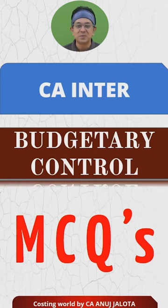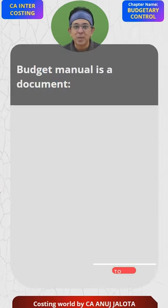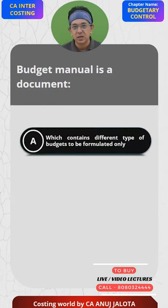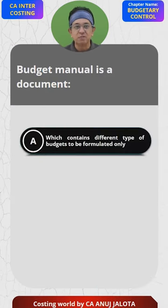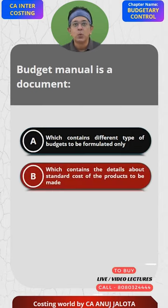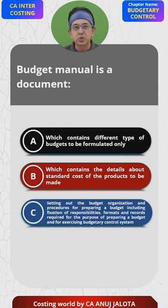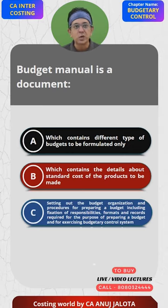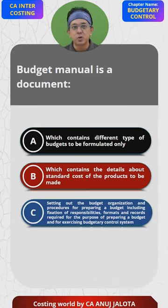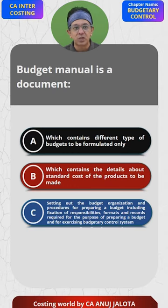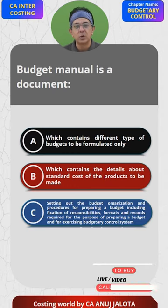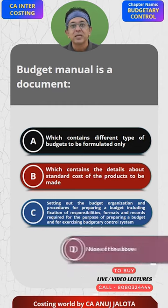Center budgetary control MCQs. Budget manual is a document which: A) contains different types of budgets to be formulated only; B) contains the details about the standard cost of the products to be made; C) sets out the budget organization and the procedures for preparing a budget, including fixation of responsibilities, formats and records required for preparing a budget and for exercising budgetary control system; D) none of the above.